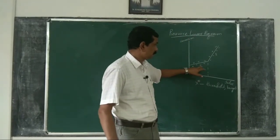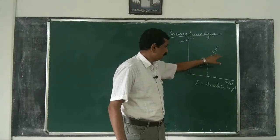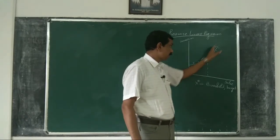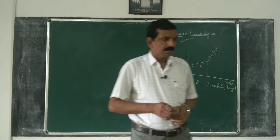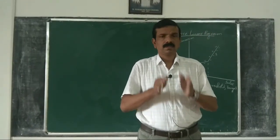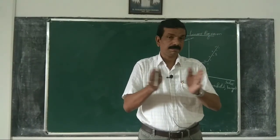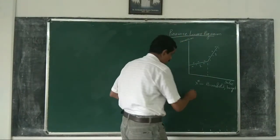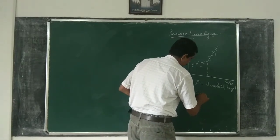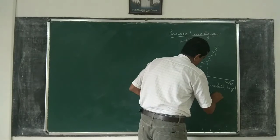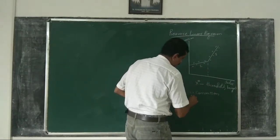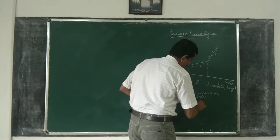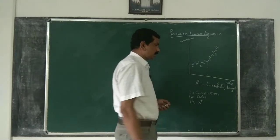We have two pieces, and both pieces are linear. Now we have to test whether there is a piecewise regression or not. We can test it if we have data on commission as a variable, sales as a variable, and x*, the threshold or target.